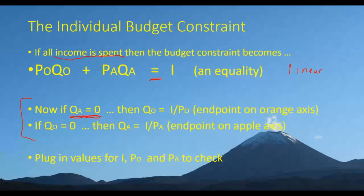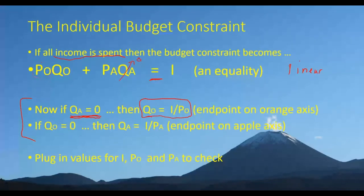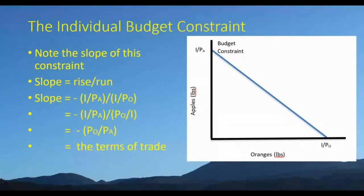Let's do a thought exercise and set QA equal to zero — not buying any apples. How many oranges could we purchase at maximum? We rearrange the equation: QO equals I divided by PO. The maximum amount of oranges purchasable with your income is I over PO, assuming you're spending all your money on oranges. That's one endpoint on the orange axis. On the graph, oranges are measured in pounds here. I divided by PO is where the budget line intersects the orange axis.